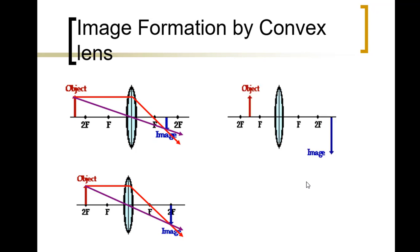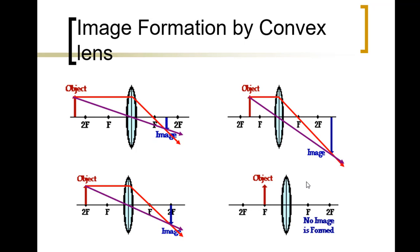If the object is between 2F and F, the first ray is parallel to the principal axis and passes through F; the second ray passes through the center and is not refracted. The result is an enlarged image located beyond 2F, larger than the object. If the object is located at F, no image will be formed — there is no intersection point.